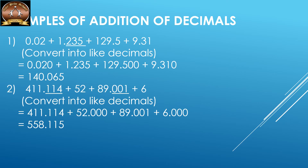The next one is 411.114 plus 32 plus 89.001 plus 6. We first convert into like decimals. The maximum number of decimal places is three, so every number should have three decimal places: 411.114 plus 32.000 plus 89.001 plus 6.000 — and the sum is 558.115.